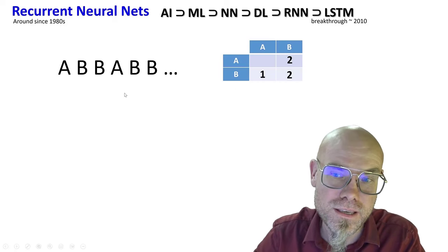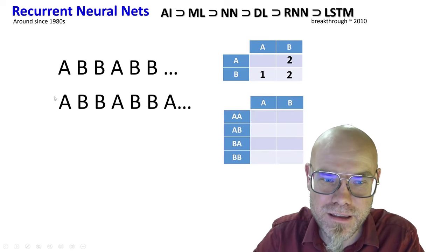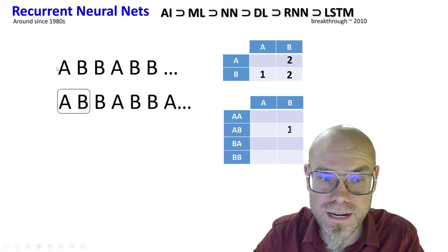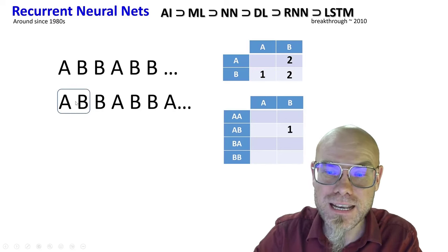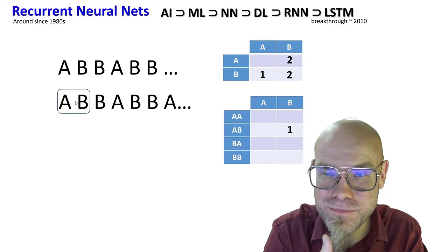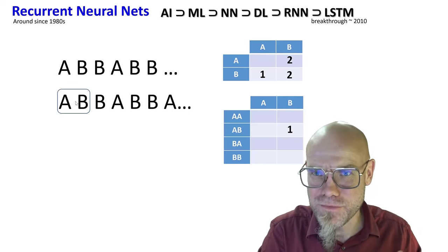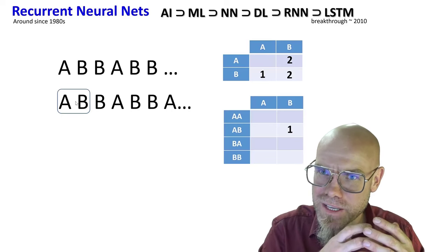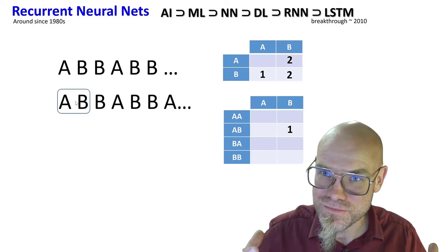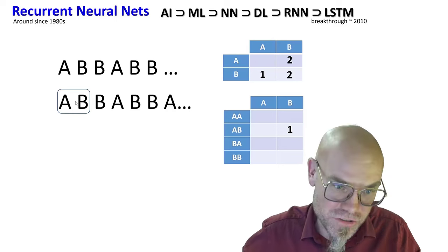Basically what they came up with is they have a longer memory. Let's not look at one letter at a time as a prediction but look at two letters as a building block. If you have more data from the past you can make better predictions.